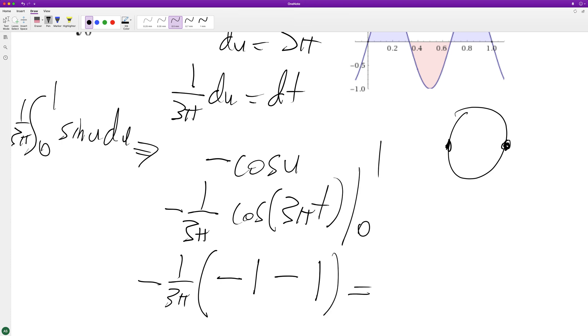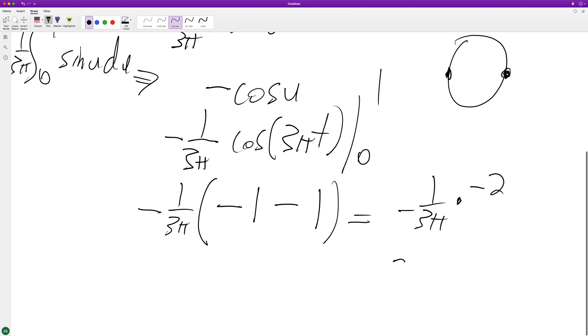So what ends up happening here is we get negative 1 divided by 3 pi times negative 2 becomes simply 2 pi over 3, or excuse me, just 2 over 3 pi.